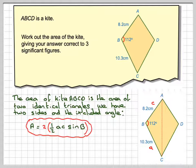However, because we want to find the area of the whole shape, we don't need to multiply by half, we just want two times that, because we want two times the area. So the two and a half will cancel out, so all we need to do is AC sine B.